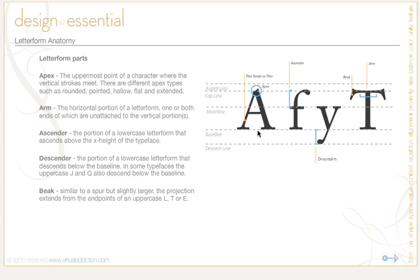Let's go ahead and look at these letterform parts. The apex is shown on the top of this letter A — it's the uppermost point of a character where the vertical strokes meet. There are different apex types such as rounded, pointed, hollow, flat, and extended. This is an example of a hollow apex.